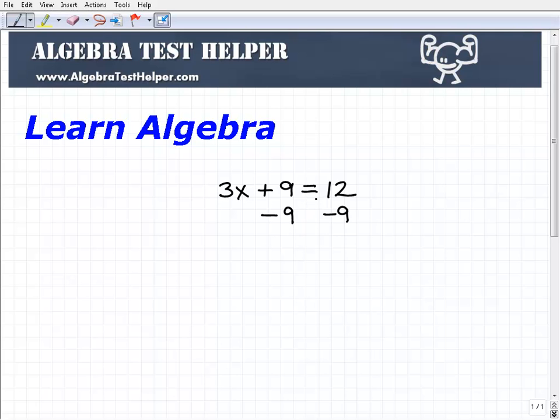So we have 3x plus 9 equals 12. The first thing I'm going to do is subtract 9 from both sides of the equation, and then I'm going to add down. When I do that, I get 3x plus nothing is 3x. I'm going to put that right here because positive 9 plus negative 9 is 0.